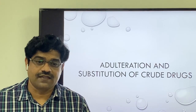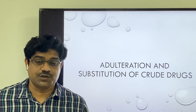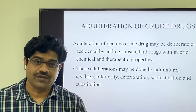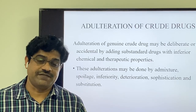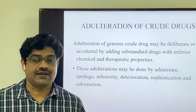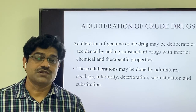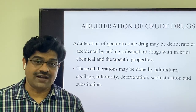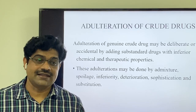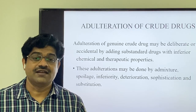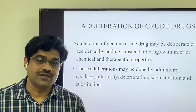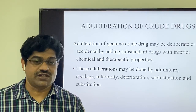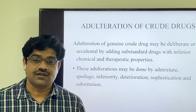Hi, my name is Mukesh. In this video I will talk about the adulteration and substitution of crude drugs. These crude drugs which are of medicinal use may be adulterated because of different reasons, and these adulterations are done by different methods. Adulteration of a genuine or authentic drug may be intentional, unintentional, or accidental, by adding a substandard or inferior variety of the drug having inferior chemical and therapeutic properties. These adulterations may involve conditions like admixture, spoilage, inferiority, deterioration, sophistication, and substitution.